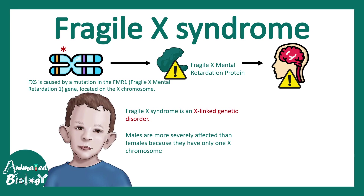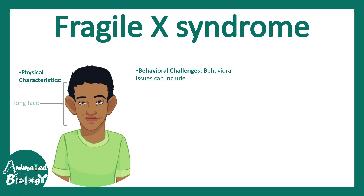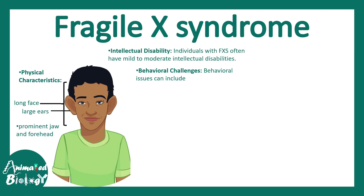Fragile X Syndrome is an X-linked genetic disorder — this is important to understand — and that is why males are more susceptible to develop this disease compared to females, because they have only one X chromosome. These patients have distinct physical characteristics: generally a long face, abnormally large ears, prominent jaw and forehead. Intellectual disability, learning disabilities, and attention disorder are common in this disease.